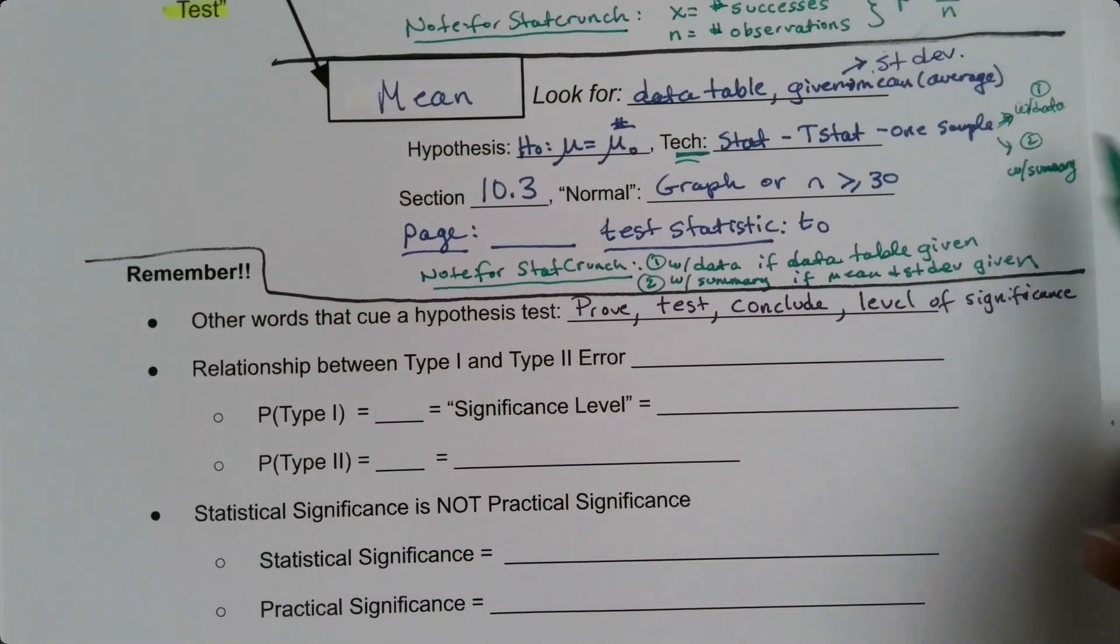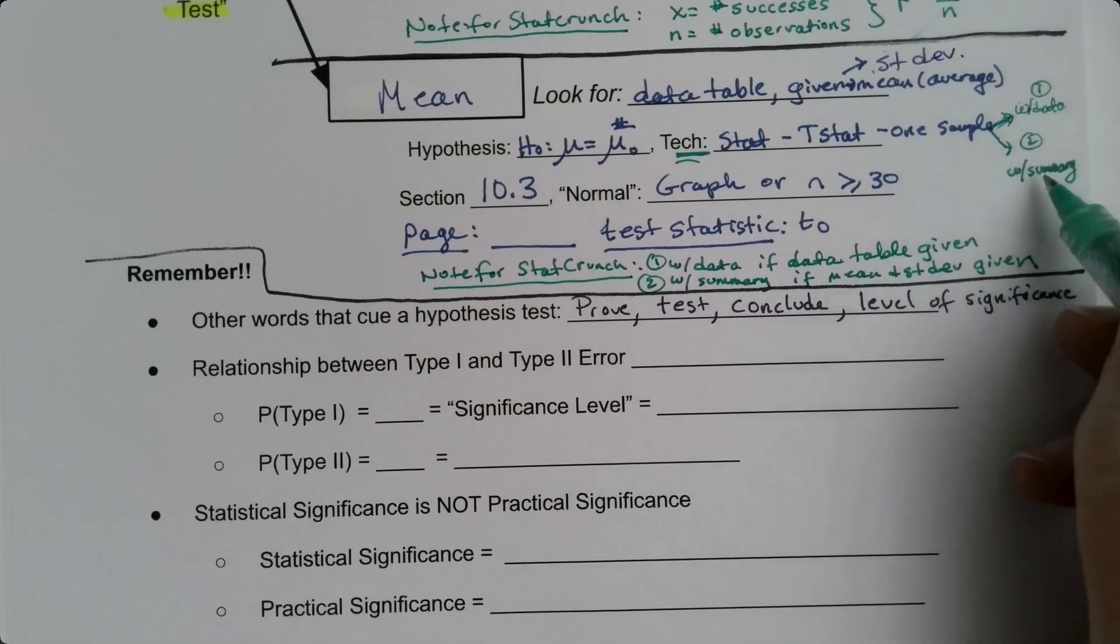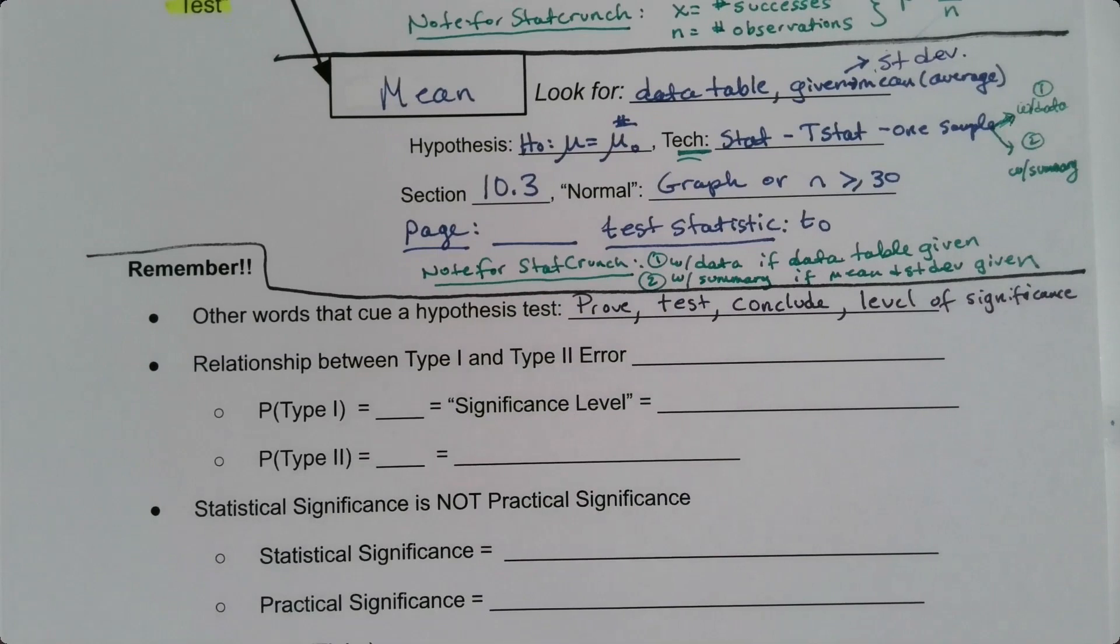Yeah, it bugged me that I didn't have them written there, so I wrote them there. So those are the two options. One is 'with data,' two is 'with summary.' And that's how you choose which one.